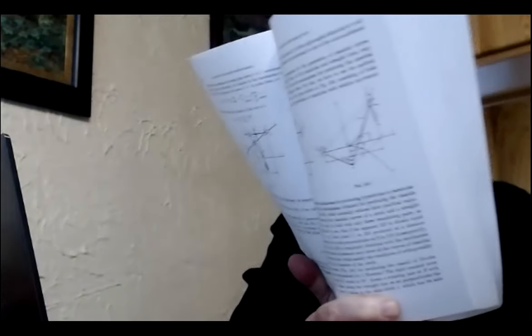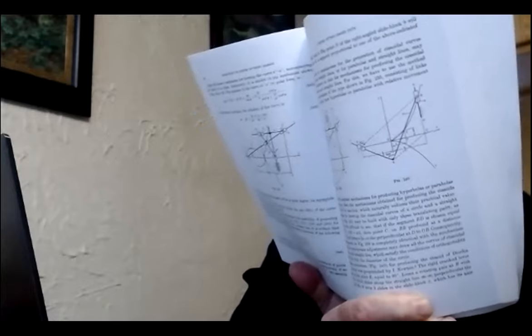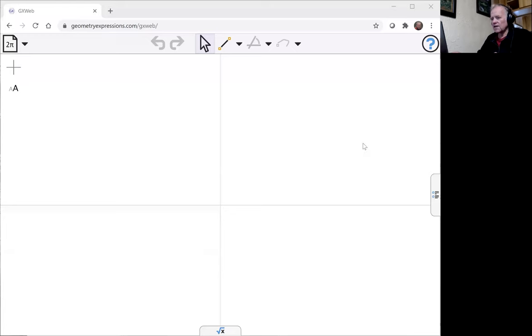Here's another mechanism for the cissoid of Diocles, I think that figure there. This one apparently was suggested by Isaac Newton, and we'll model it with GeoGebra.